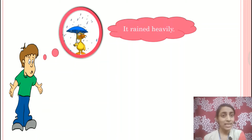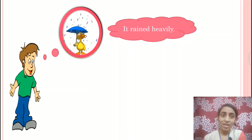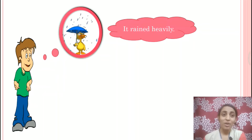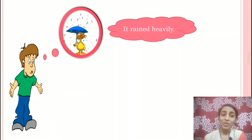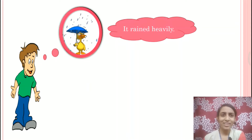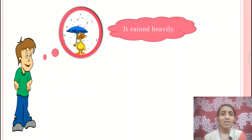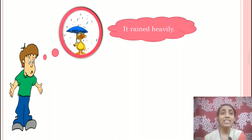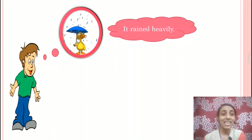Now let us learn about intransitive verbs. The example is: 'It rained heavily.' We can clearly see that we don't get any answer for the questions 'what' and 'whom.' What did it rain? No answer. Whom did it rain? No answer. The questions don't even make sense. So clearly there is no object in the sentence.